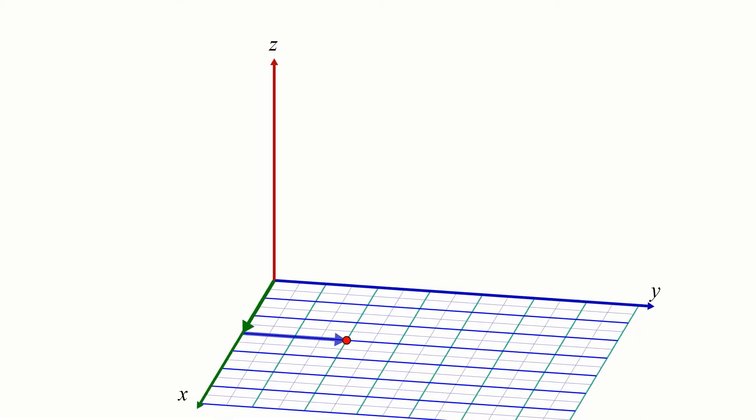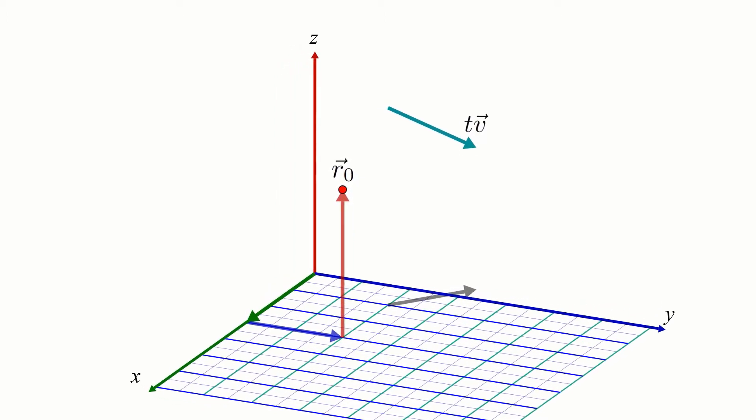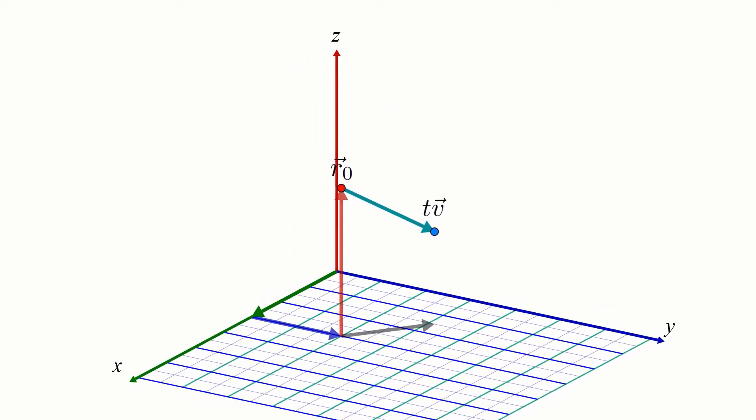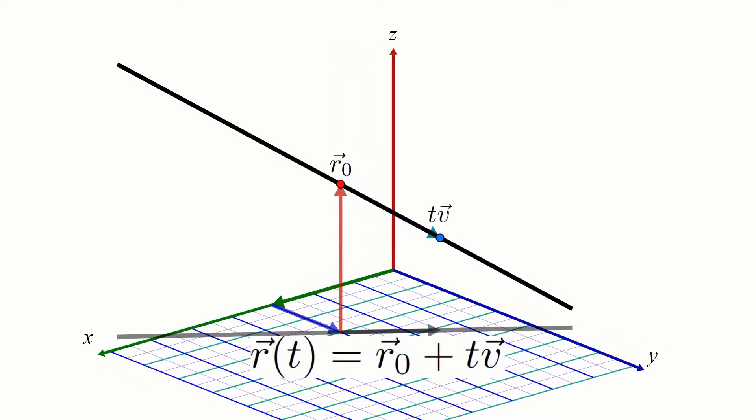We have seen that a line in three-dimensional space can be defined using a point on the line and a parallel direction vector. We also know that the vector equation of a line is given by r of t equals r0 plus tv.